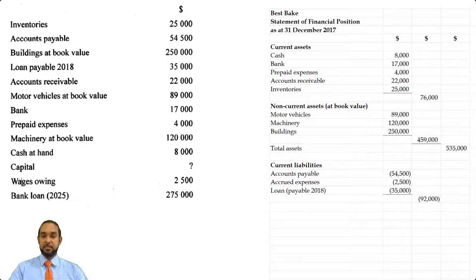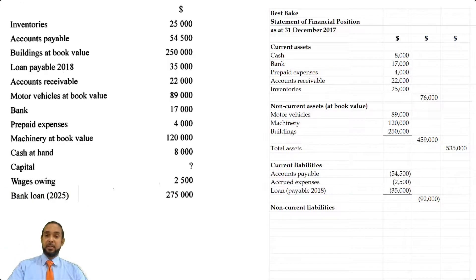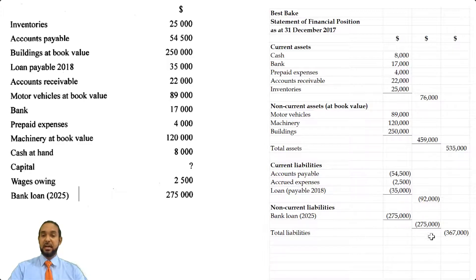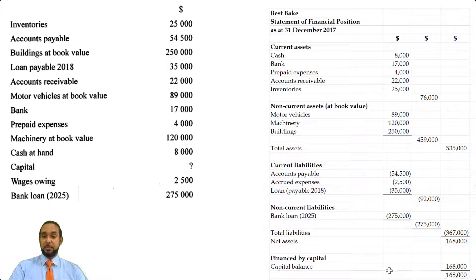So we're going to put in those three items, take a subtotal, and then do the section for non-current liabilities, of which we have one: bank loan 2025, which is repayable more than one year from the balance sheet date. We're going to put in that one non-current liability of $275, add those two figures together to get total liabilities, and then subtract 367 from 535 — assets of $535 minus liabilities of $367 — to give us net assets. Then we just say 'financed by capital,' put that figure, and total that section.